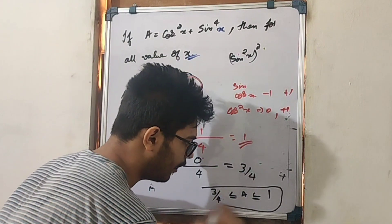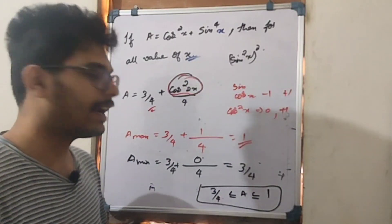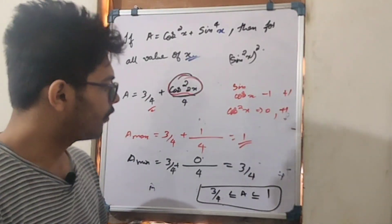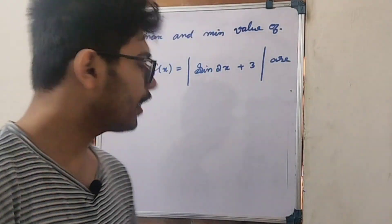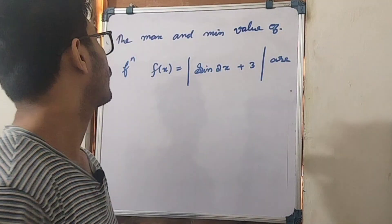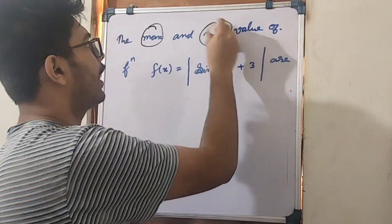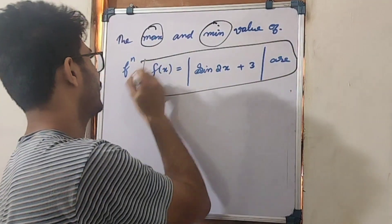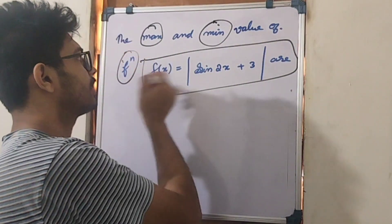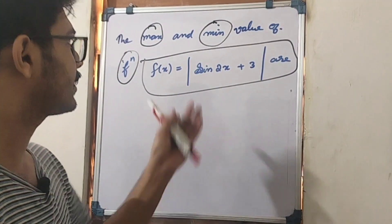This is option B. The minimum value of the function is 3/4 and the maximum value of the function is 1.